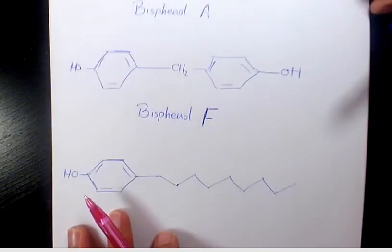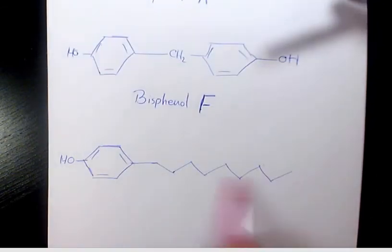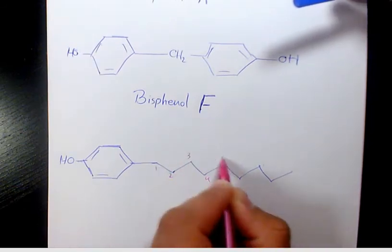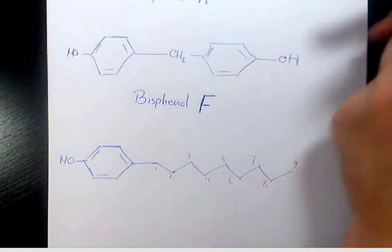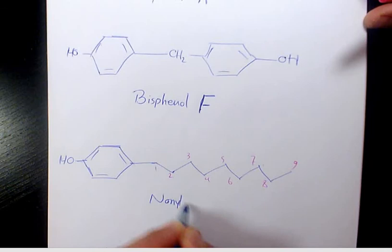And next, we have a phenol group here and we have here one, two, three, four, five, six, seven, eight, nine, and we have the compound called nonylphenol.